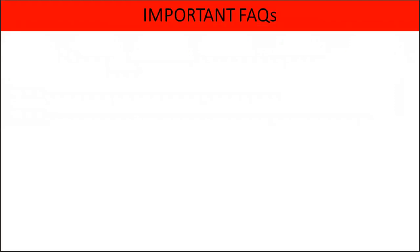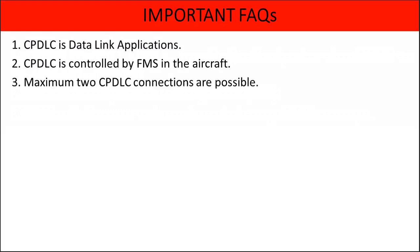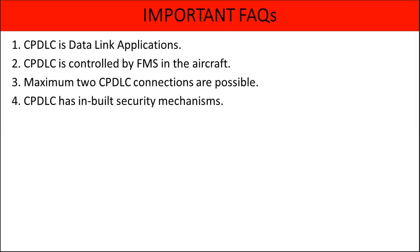Some important facts about CPDLC: 1. CPDLC is a data link application. 2. CPDLC is controlled by the FMS in the aircraft; if the FMS is unserviceable, it will cause the loss of CPDLC. 3. A maximum of two CPDLC connections are possible — one active and one passive based on data authority: active with the current data authority and inactive with the next data authority. 4. CPDLC has inbuilt security mechanisms; if the CRC is intact, the message has not been corrupted during transmission.